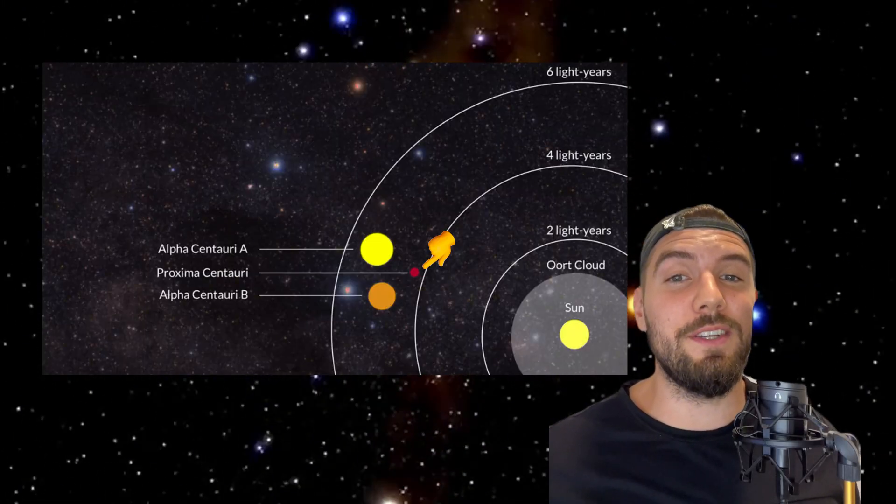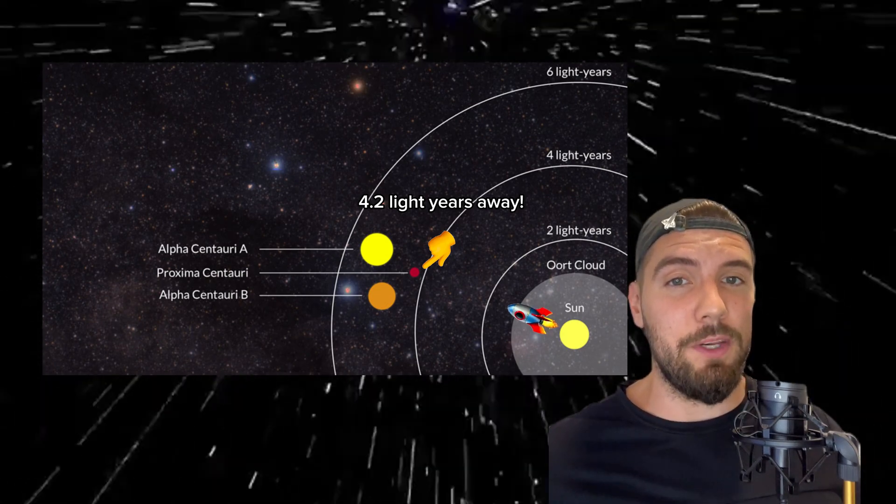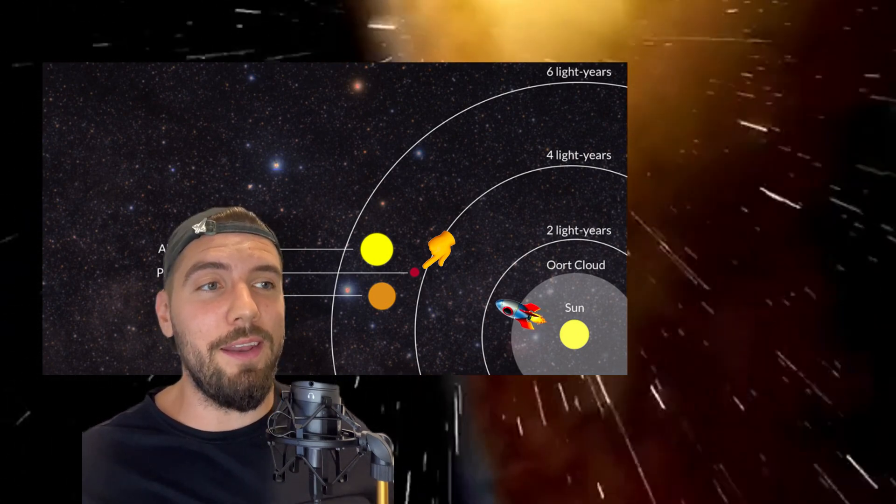The closest star to us, Proxima Centauri, is still over four light years away, meaning even if we somehow find a way to travel at the speed of light, it would take us four years of non-stop travel to get there, and this is our nearest neighbor. Clearly, we've got some work to do if we want to be hopping between solar systems anytime soon.